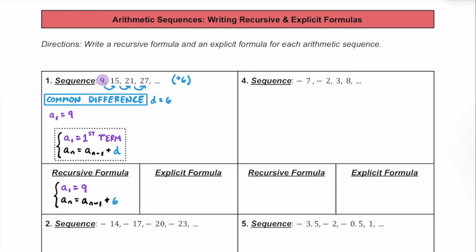Now, what about the explicit formula? The explicit formula for sequences says that a sub n, or any number in the sequence, is going to be based on a sub 1, the first number in the sequence, plus n minus 1 multiplied by the common difference. So if you were looking for the 10th number in the sequence, n would equal 10, and you'd calculate 10 minus 1 equals 9, times the common difference, plus the first number in the sequence, to get that 10th number.